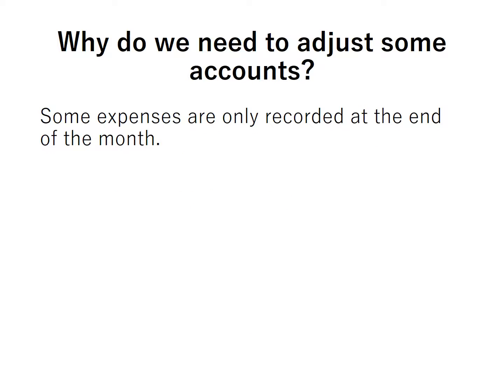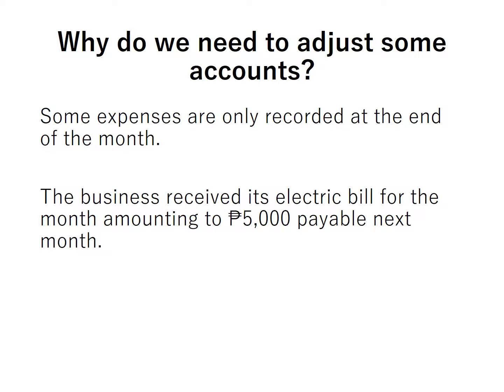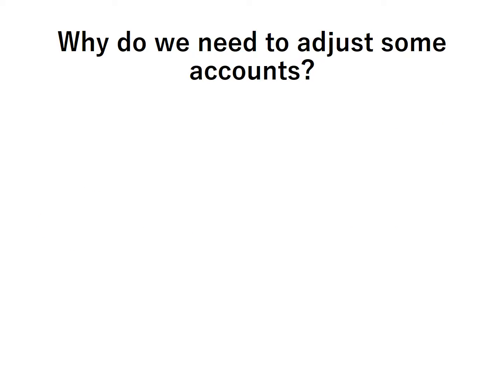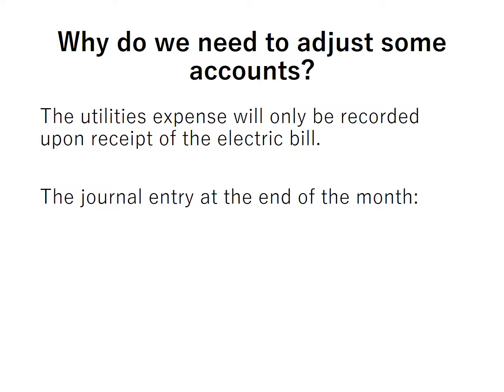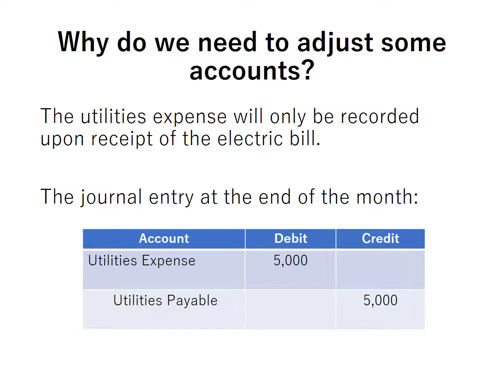Second reason: some expenses are only recorded at the end of the month. Example: the business received its electric bill for the month amounting to P5,000, payable next month. We have a similar transaction for PAMIN 21 Consulting Services wherein only the bill was received but the payment will be made the next month. The utilities expense will only be recorded upon receipt of the electric bill, so we need to make the necessary adjustment. The journal entry at the end of the month will be a debit to utilities expense P5,000 and a credit to utilities payable P5,000.